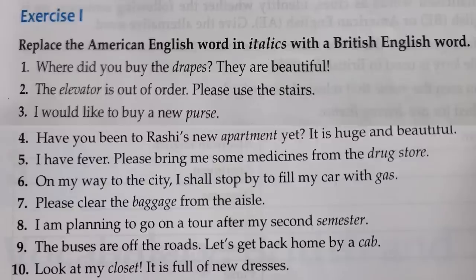Exercise one says: replace the American English word in italics with the British English word. The words given in italics are all in American English and we have to change them into British English. The first one: 'Where did you buy the drapes?' — 'Drapes' is called 'curtain' in British English.